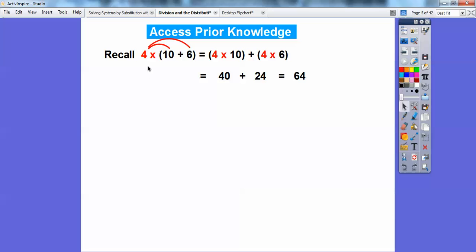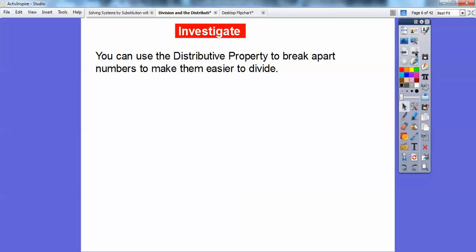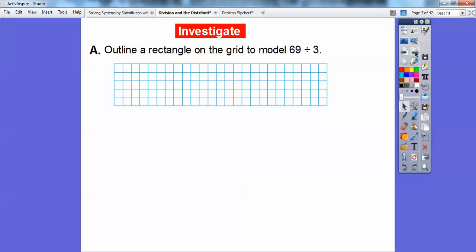So if we had, for example, 4 times 16, because 10 plus 6 is 16, we can break that 16 up into 10 plus 6 and then use the distributive property. So we're going to do that with division. We can use the distributive property to break apart numbers to make them easier to divide.